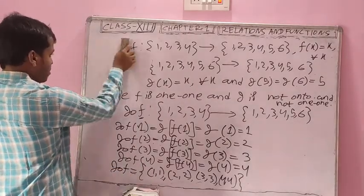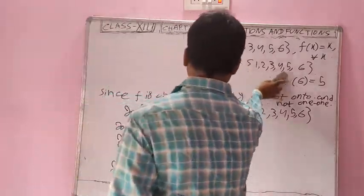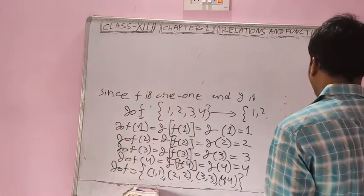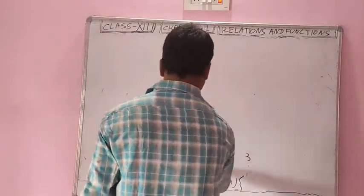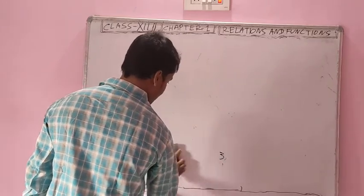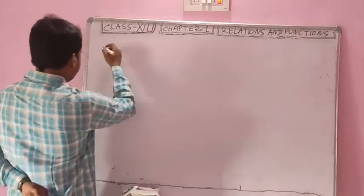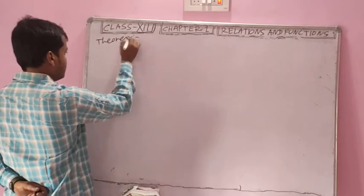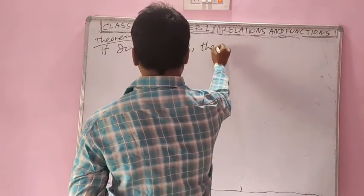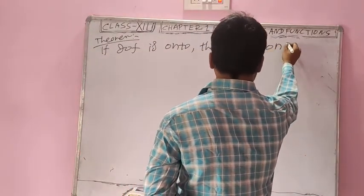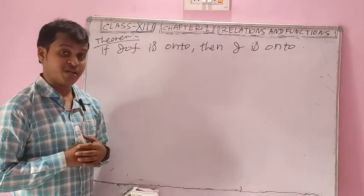Come to the next property of G∘F. This property is for onto functions. If G∘F is onto, then which function must be onto? G is onto. And which one may or may not be onto? F may or may not be onto. If G∘F is onto, then G must be onto, but F may or may not be onto.